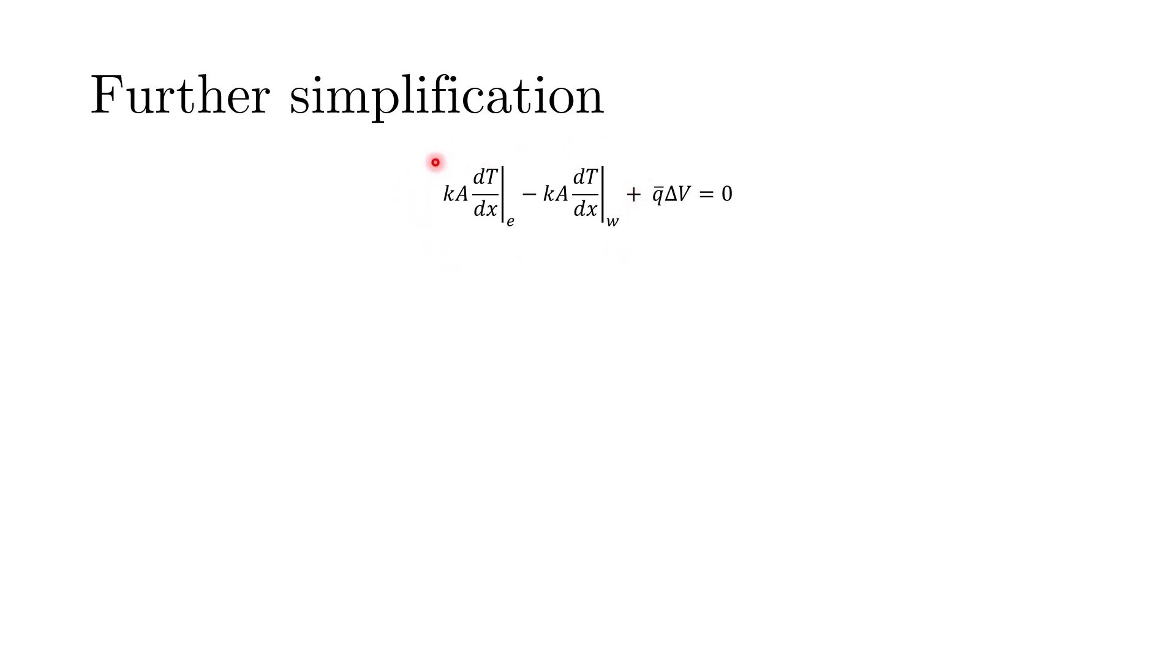We looked at the central differencing scheme or the piecewise differencing scheme piecewise linear scheme in order to look at the expression of these gradient terms. According to that what we do is we write this Q bar delta V as SU some constant term plus SP into TP. So we are trying to linearize the source term. You can think of this being Y equals to M X plus C where M is SP, X is equivalent to TP. You can very well see that if we have a constant source like we have in this particular demo problem then we have SP equals to 0. So then we will only have the contribution from SU.